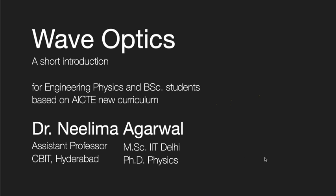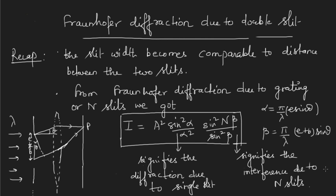In this lecture we would try to learn about Fraunhofer diffraction due to double slit. Before going to that, let me quickly recap the last lecture. We took the slit width comparable to the distance between two slits — we'll take the same case here. In the last lecture on diffraction due to grating or n slits, we got the interference pattern.